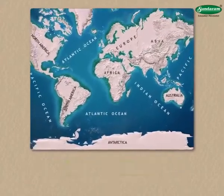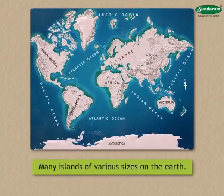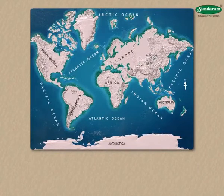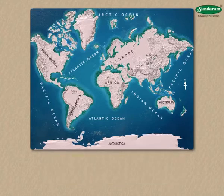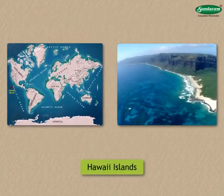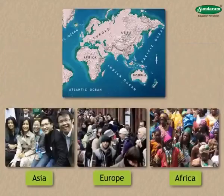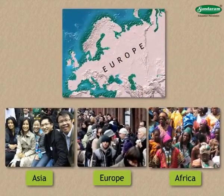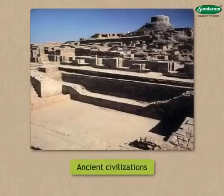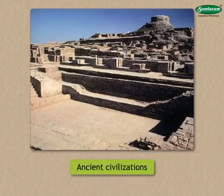Besides the continents, there are many islands of various sizes on the earth. Generally, these islands are considered a part of the continent near which they lie. But some islands, like the Hawaii Islands, are very far from the continents. There have been human habitations since ancient times in the three continents of Asia, Europe and Africa, and many ancient civilizations originated here.